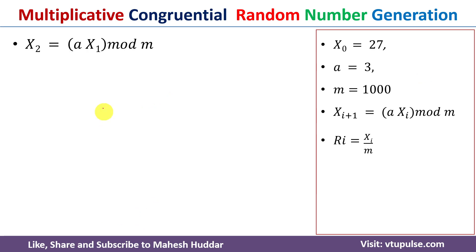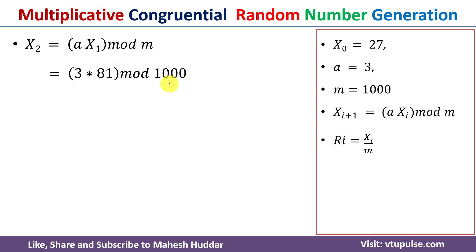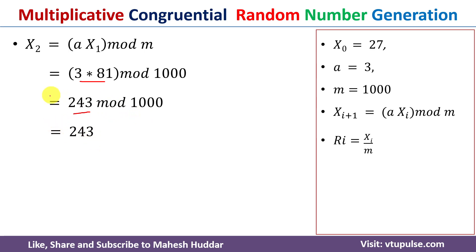Once we calculate X₁, we need to calculate X₂. X₂ = a · X₁ mod m. Here a = 3, X₁ = 81, m = 1000. So 3 × 81 = 243, which is less than 1000, so the remainder is 243. Therefore X₂ = 243.